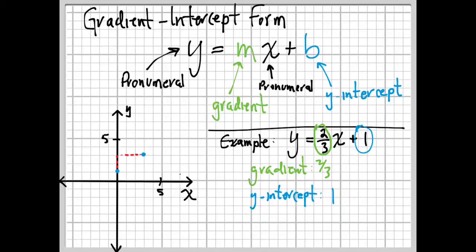We just use that gradient. Go up two, over three, and we plot a point. Now we have two points, and two points determine a line. So, we can just draw a line straight through those two points, and we're done. Easy as that.